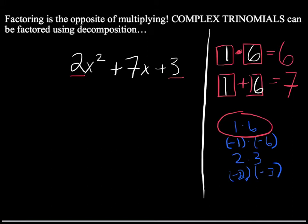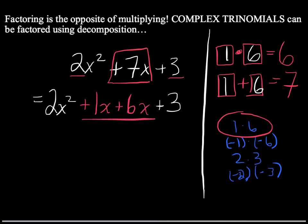Now we can go back to the main problem and get started. We're going to leave our 2x² and our 3 the same, and we will break down the middle term, this 7x in the middle. We will turn that into +1x + 6x. That's the 1 and the 6 from the rough work we did on the side.